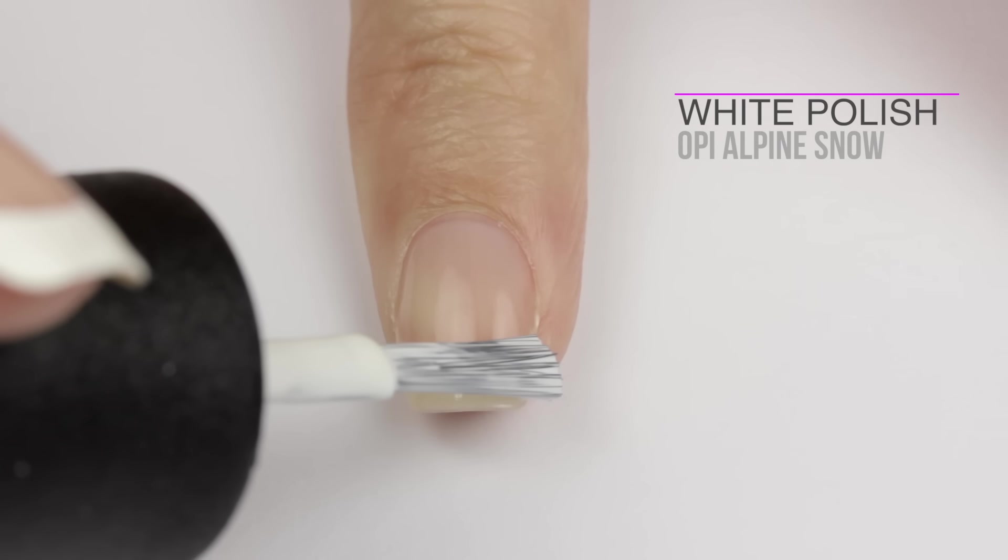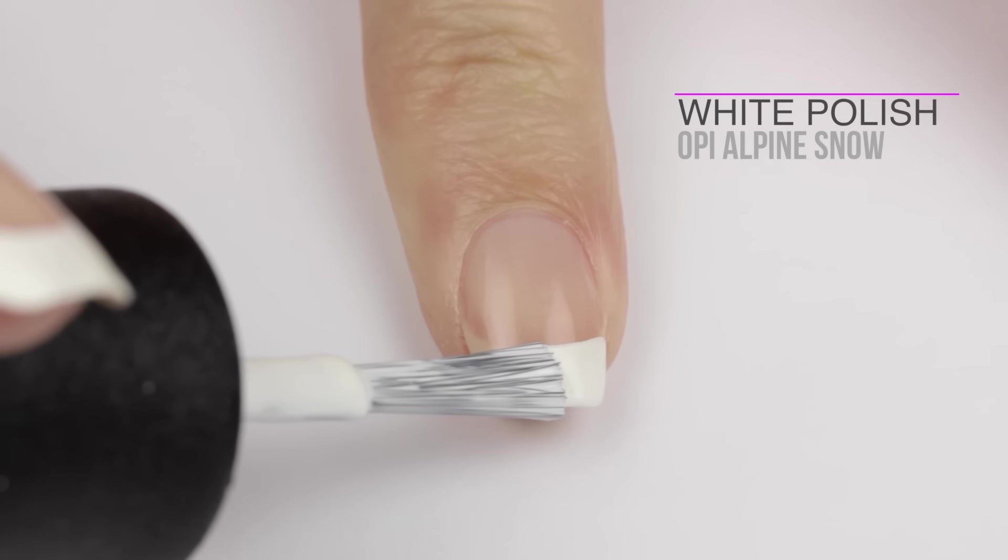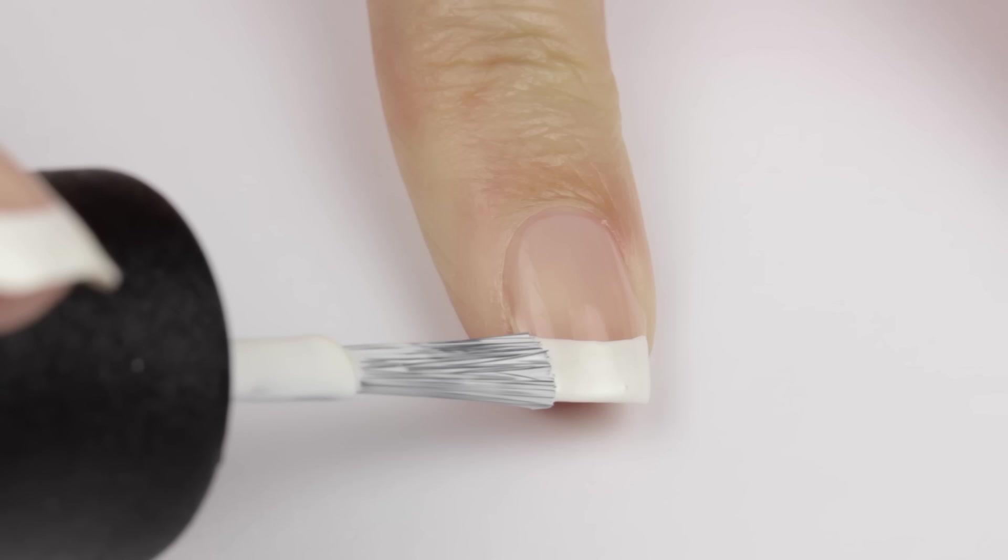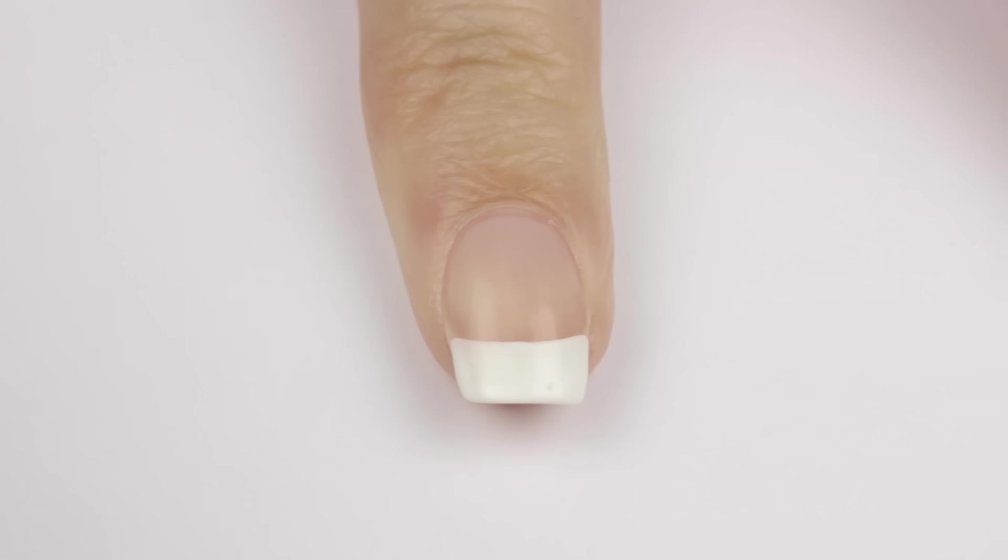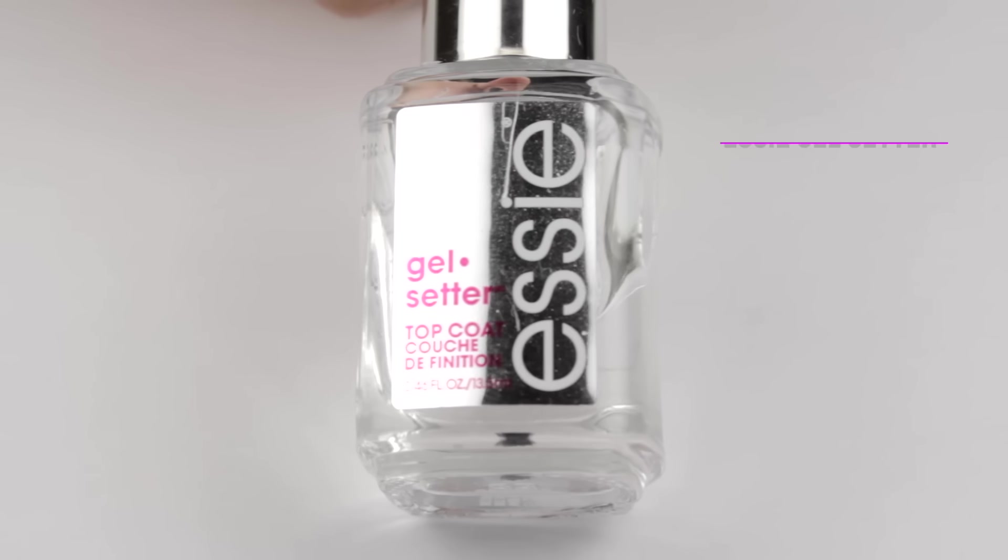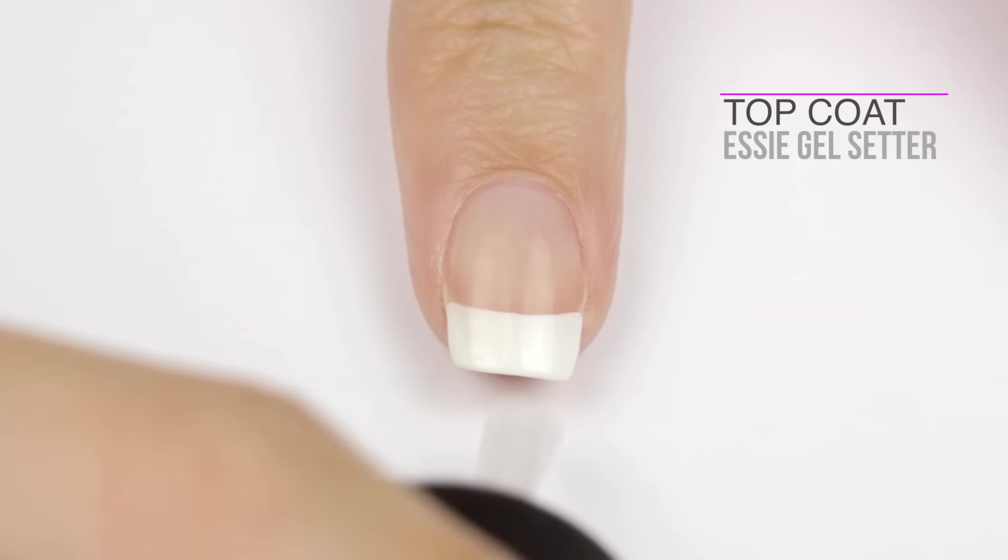Start at the side of your nail and slowly rotate the finger you're working on to add the white tip. The trick here is to slowly turn your finger. This works a lot better than moving the brush, especially when you're using your non-dominant hand. Finish off with a fast drying top coat to seal it in and add a beautiful shine.